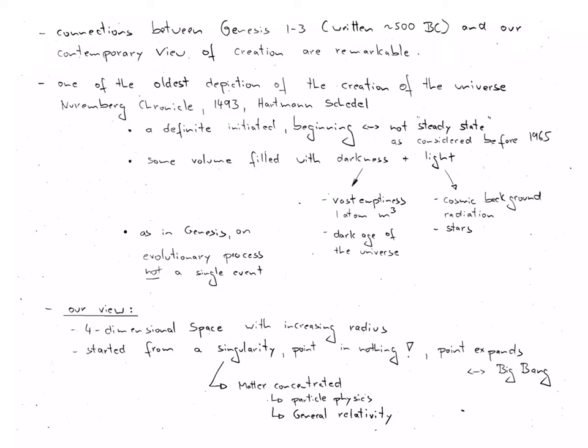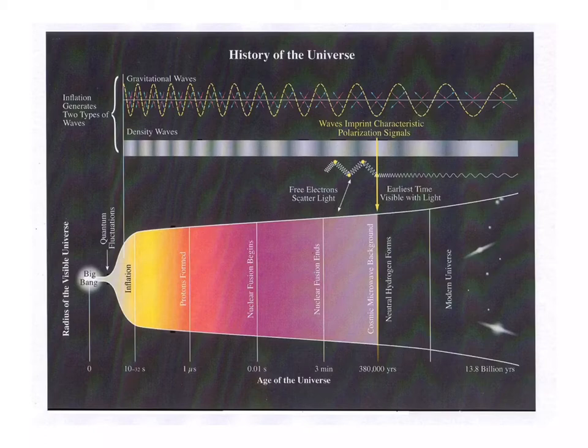Our modern view of the cosmos goes beyond the simple ideas pointed to in Genesis. We are considering a four-dimensional space-time with increasing radius, and we are discussing a singularity, the Big Bang, which was a point in nothing, a singularity in nothing, which since then has been expanding. The two important physics theories that describe the cosmology are the theories associated with particle physics, and the theory of general relativity, which is the relativistic theory of gravitation. The combined information from these two physics theories underpins our modern understanding of the world.